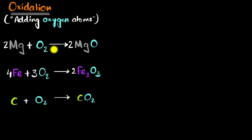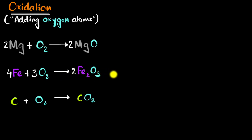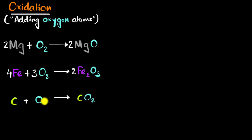A question I always had was: why do we give a name to these kinds of reactions? What's so special about oxygen? Well, these reactions are important. Iron oxide — which we call iron 3 oxide because the charge on iron will be plus 3 — is the molecule you find in rust. Rusting also involves water. And combustion also involves oxygen. Since these reactions are important and they involve oxygen, that's probably why we call it oxidation.